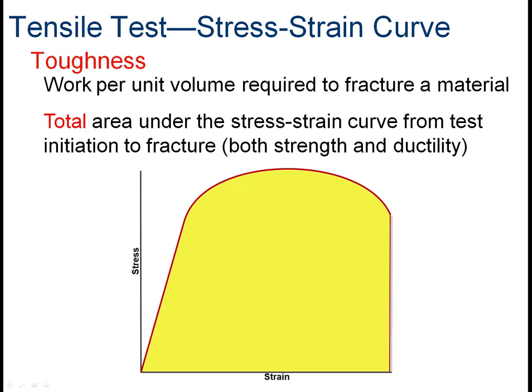We've talked about brittleness, strength, yield, and rupture. The last idea in tensile testing is toughness — the ability to absorb total energy before failure. Toughness is represented by the total area under the stress-strain curve, expressed as work per unit volume. The toughest materials are both ductile and strong in terms of ultimate strength, so they have the largest net area under the curve.